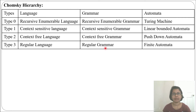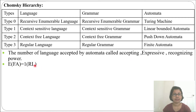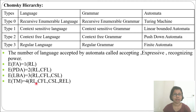For every language there is a grammar: Type 0 has recursively enumerable grammar, Type 1 has context-sensitive grammar, Type 2 has context-free grammar, and Type 3 has regular grammar. For every language there is also an automata or machine that accepts it: for recursively enumerable language it is a Turing machine, for context-sensitive language it is a linear bounded automata (LBA), for context-free language it is a pushdown automata (PDA), and for regular language it is finite automata (FA).